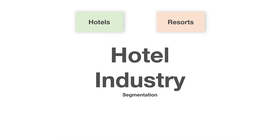Resorts are built around popular tourism destinations and summer vacation spots. Typically they are located on bigger pieces of land and have additional facilities for health, sports, entertainment, and shopping. There are different types of resorts — for example, beach resorts, spa resorts, ski resorts, golf resorts, island resorts, and others.